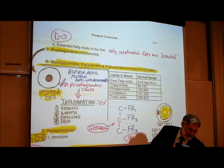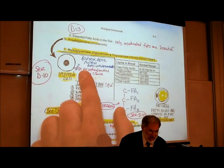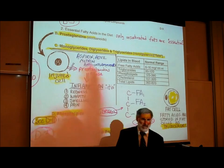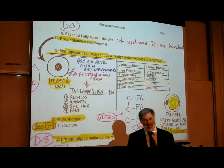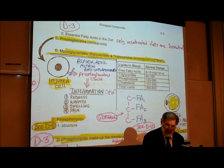Another type of fat is prostaglandins. Prostaglandins get their name because they were first identified in the prostate gland of men — that has nothing to do with their function, that's just how they got their name. Before we tell you what prostaglandins are for, let's see a picture of them on page D10.